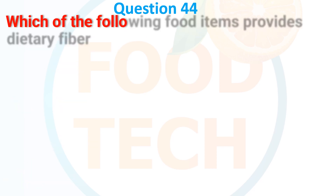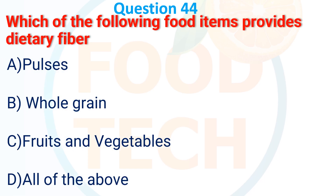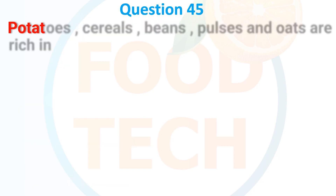Question 43: Which of the following food items provide dietary fiber? A. Pulse, B. Whole grain, C. Fruit and vegetable, D. All of the above. The answer is D. All of the above.